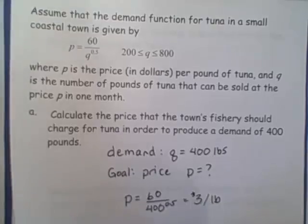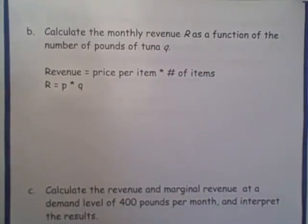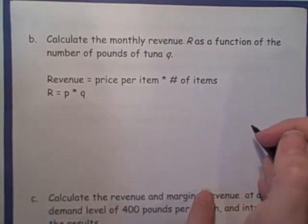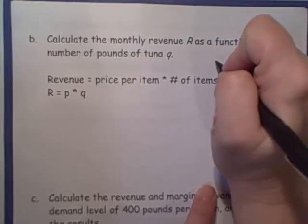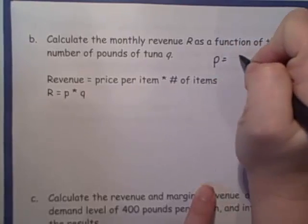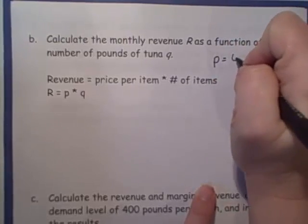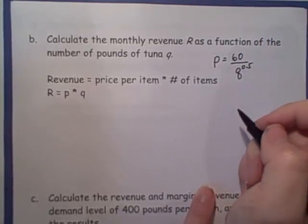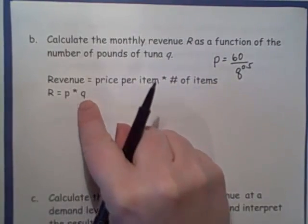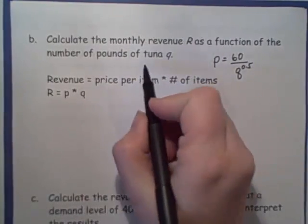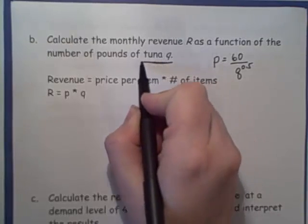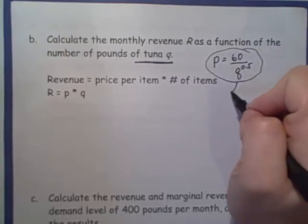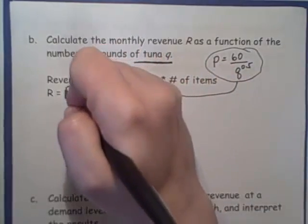Okay, so let's move on to part B. So it says calculate the monthly revenue, R, as a function of the number of pounds of tuna, Q. Now remember from the original statement, we had P equals 60 over Q to the 0.5. Our revenue is P times Q, and they tell us that they want it to be in terms of Q.